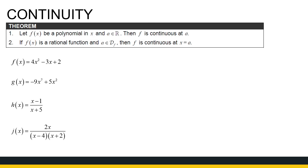Polynomials are continuous on all real numbers — we saw this looking at the graph intuitively. Their domain is all real numbers, so they're continuous on all real numbers. So functions f and g, being polynomials, are continuous on all real numbers. A rational function is continuous on its domain.